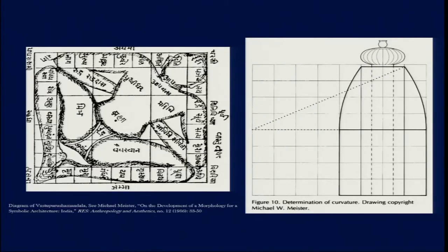The other thing about the ground plan is that the cardinal directions — north, east, south, and west — play a very important part. And there are also the other four directions. So altogether there are eight directions, which are found to be very important in this ground plan as well as in the Hindu idea of the universe.